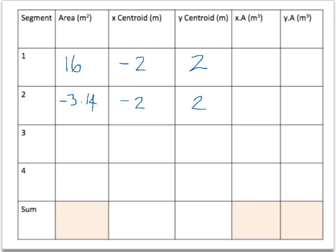Segment 3 is the rectangle just to the right of the Y axis, so our area was 24m squared. Our X centroid was 3m, and our Y centroid was 2m.